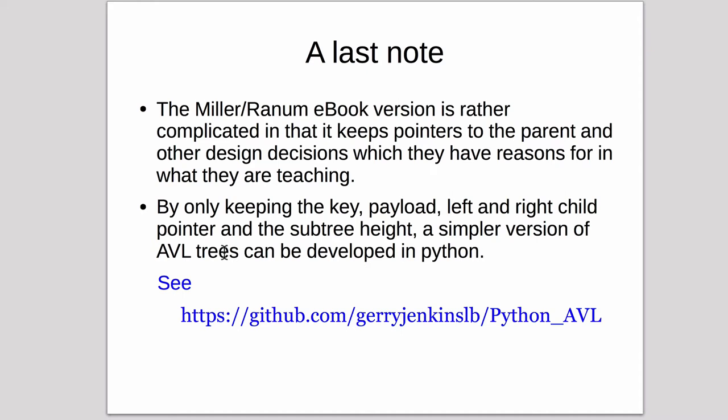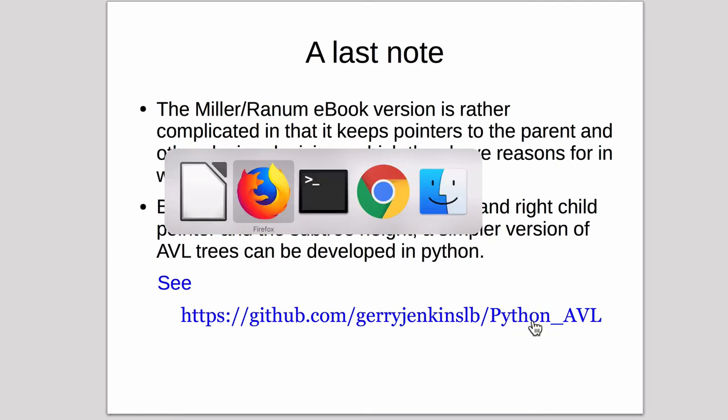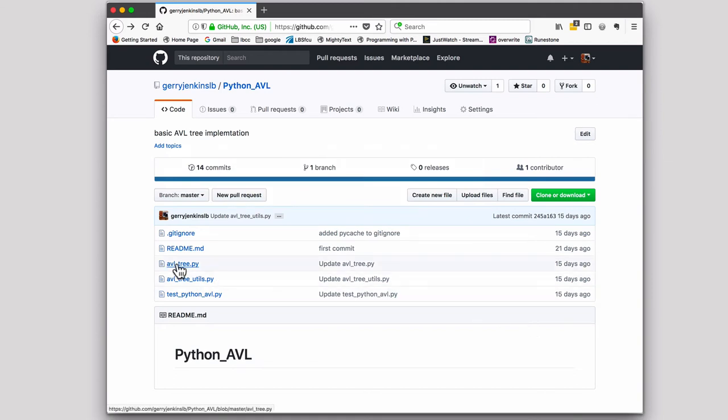So I basically did a Python version which implements everything that you can look up here under github.com Jerry Jenkins LB slash Python AVL. So you go to this link and it'll look like this. And you'll have AVL tree. AVL tree is a simplified version that is only 141 lines. So that's about half the code of the author's code. And then there's a test suite that tests it all works. And there's some utilities that are useful. So you can take a look at this when you have time.